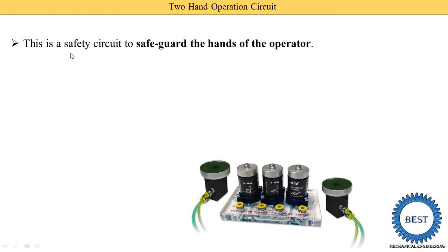In industries, a number of hydraulic and pneumatic systems are used and they are riskier — if the hand of the operator comes on the machine or in between two parts of the machine, there are chances of accident. The two-hand operation circuit keeps both hands of the operator busy, reducing the chances of accident. That is why it is called a safety circuit to safeguard the hands of the operators.